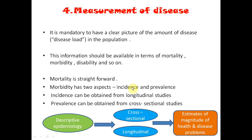Incidence is very vital in controlling an epidemic. Incidence can be found out in longitudinal studies, whereas prevalence can be found out in cross-sectional studies.